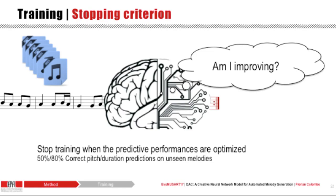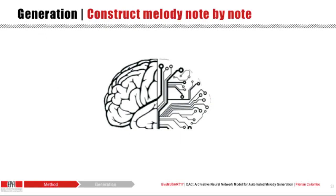Eventually, our model of note transitions has extracted enough of the relationship between notes in order to maximize the accuracy of its predictions. We will stop training when the predictive performance is optimized. At any stage of training, we can turn our model into an autonomous composer.